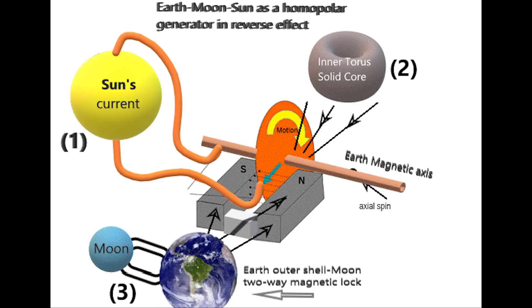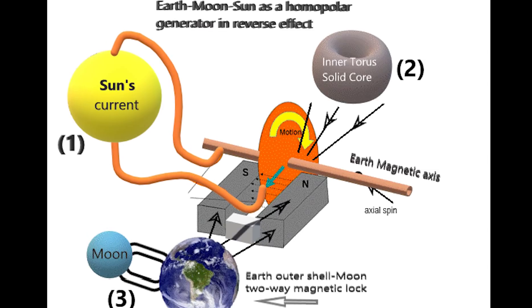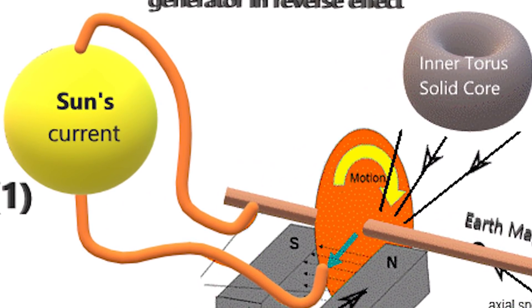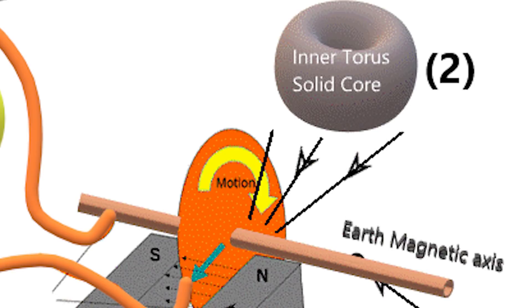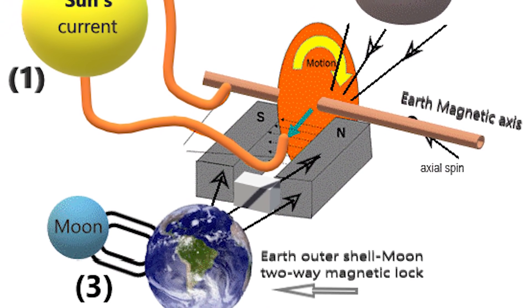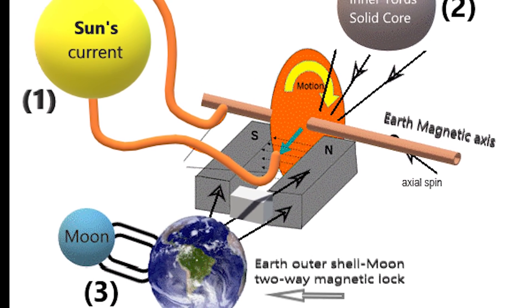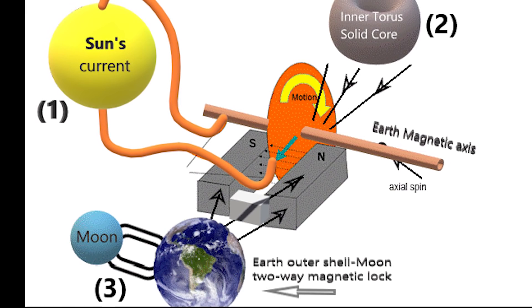The following diagram is a representation of Earth's spin force as the homopolar generator effect in reverse. As you can see here, starting with 1, which is the Sun's current, the electric current, the Sun's electromagnetic cord, going into number 2, the electrically conductive disk or the planet's solid inner torus-shaped core, and 3, the magnet or a moon's electromagnetic grip onto a planet's outer shell structure.